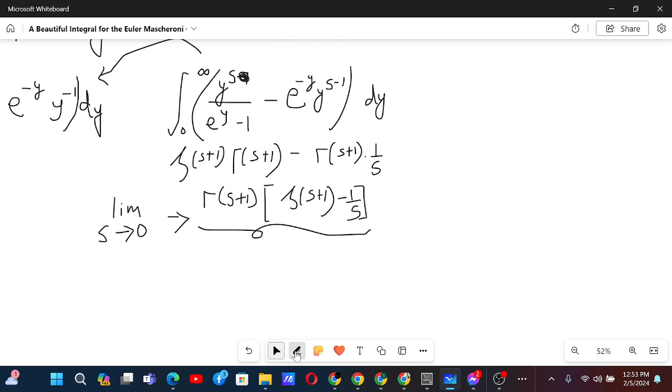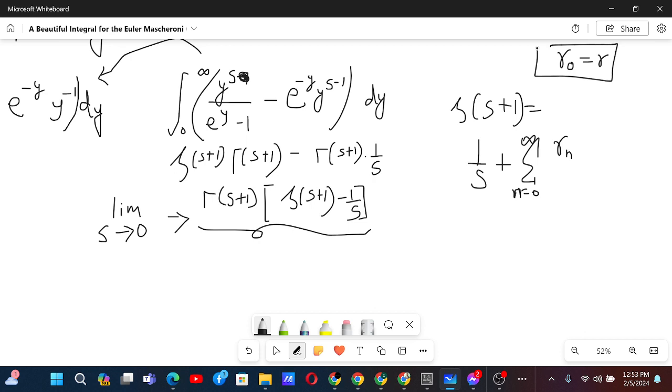Now for this, there is a zeta function, a series for zeta function that can help us with this. And the series is from Fourier transform, which is something like this. Riemann zeta of s plus 1, this is equal to 1 by s plus sum goes from n equals to 0 to infinity. And we have a Stiltjes constant. So if this is going from n equals to 0, this is not Euler-Mascheroni constant, this is Stiltjes constant.